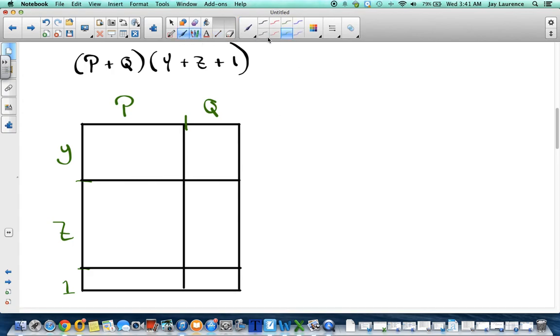So, let's find the area of each piece. Well, y times p, py. Now, you might have said yp. It wouldn't be wrong. We tend to write things alphabetically. It makes it a little bit easier. y times q, qy. p times z, pz. q times z, qz. p times 1. That's a hard one. q times 1. That's another difficult one. So, I have py plus pz plus p plus qy plus qz plus q. That's it.